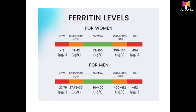Now we will discuss normal ranges. For women, the normal range is 13 to 150 micrograms per liter, though you should check your own laboratory's reference range based on the kit and machine used, as normal ranges can vary. Borderline low is considered 12 to 13, and less than 12 means the level is low. Borderline high is 150 to 154, and more than 154 means the level is high.